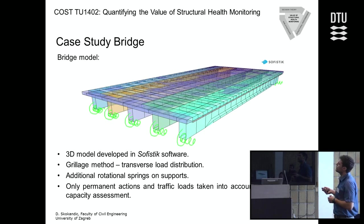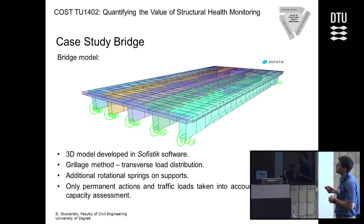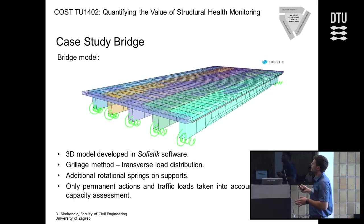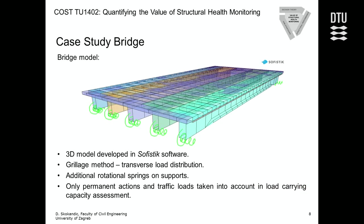I developed a 3D model in Sophistic Software based on the grillage method to obtain the real load distribution from the deck to each girder. Although it is a simply supported bridge, I added additional rotational springs on the supports — not used in the first step, but used later when applying the realistic influence line, since we will see that in reality the bridge behavior is not 100% simply supported. Permanent actions from dead load and traffic loads are taken into account; horizontal forces, wind, and brake forces are excluded.